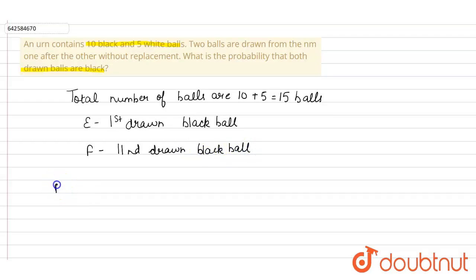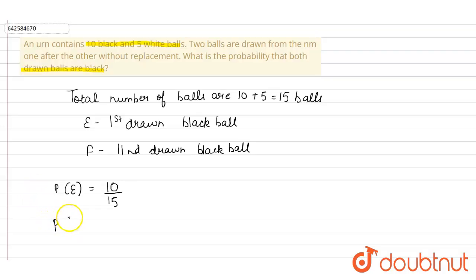The probability of event E — first drawn ball being black — would be the total number of black balls, that is 10, upon the total number of balls, that is 15. Now one ball is deducted from the total, so the remaining balls are 14, and one ball is deducted from the black balls, so the remaining black balls are 9.